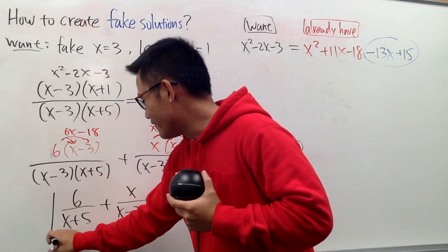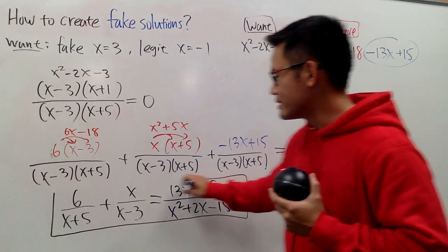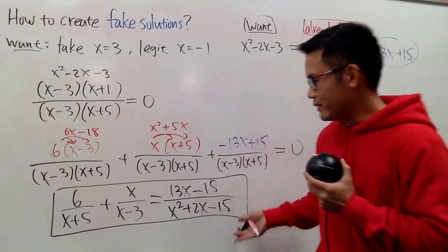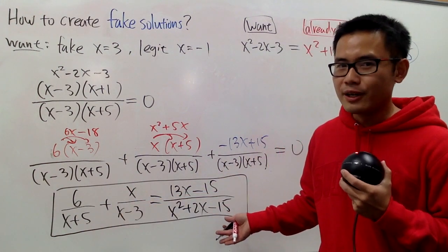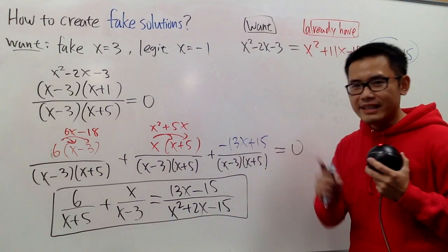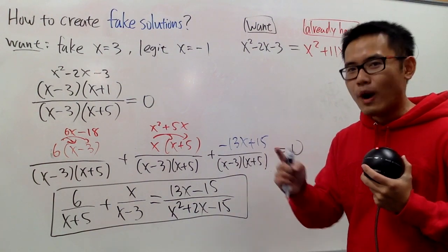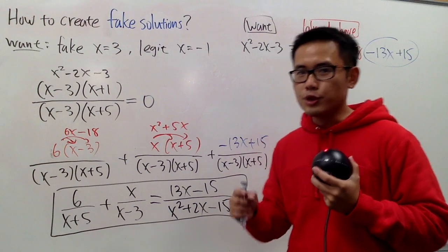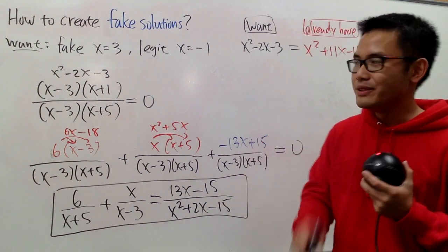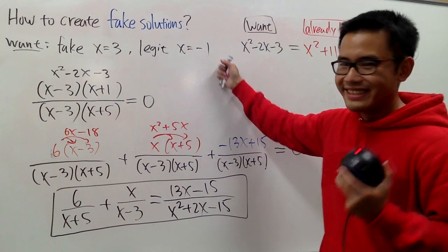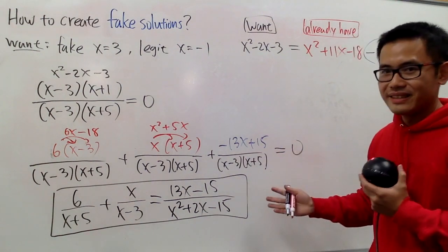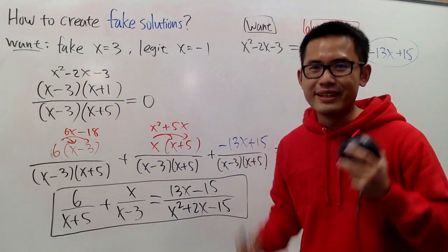Now, this is the final result. And I promise, if you solve this the usual way, you know, get the lowest common denominator, multiply everything by the lowest common denominator, you solve. At the end, you get two solutions. One is going to be 3, the other one is going to be negative 1. And 3 is fake, while negative 1 will be legit. And that is it. Hopefully, you guys like it. That's it.